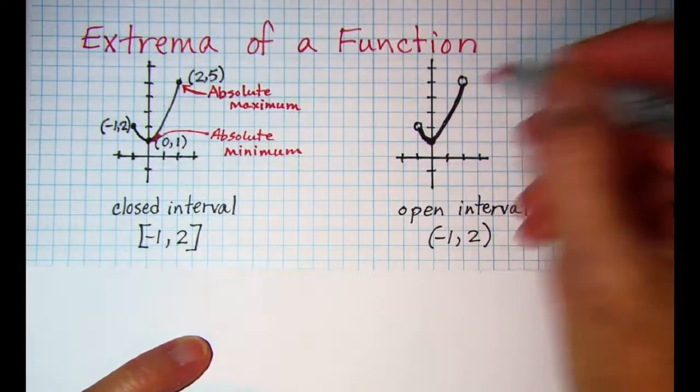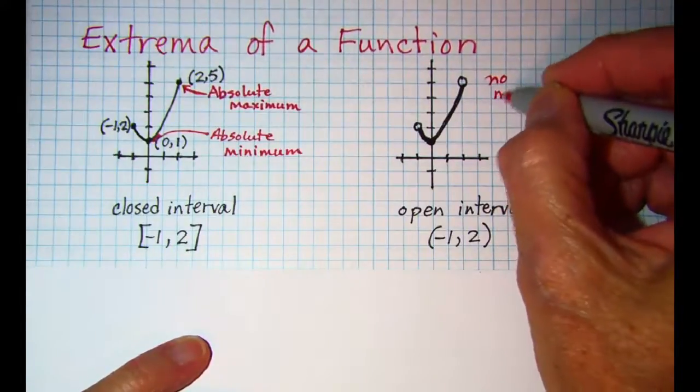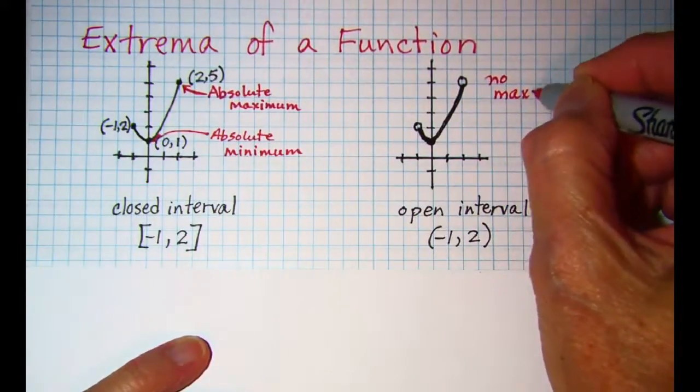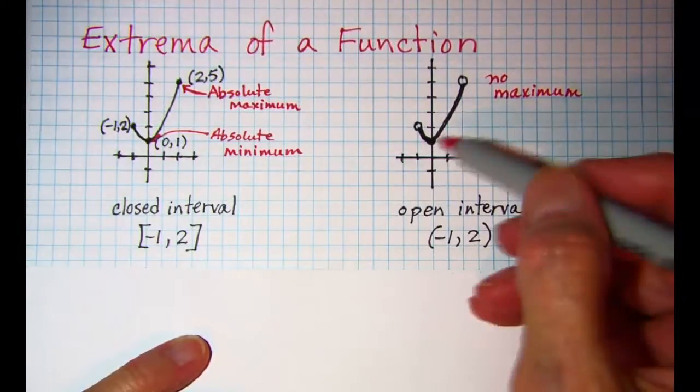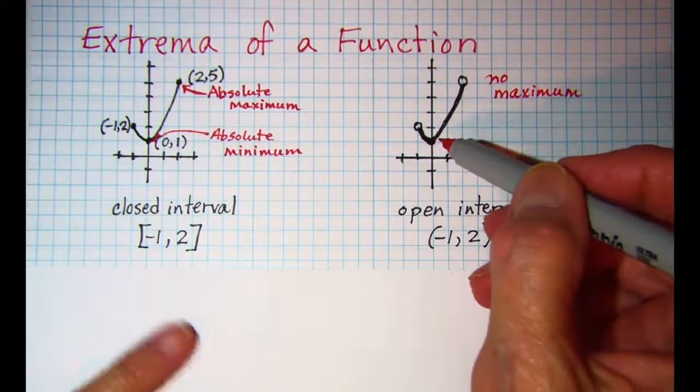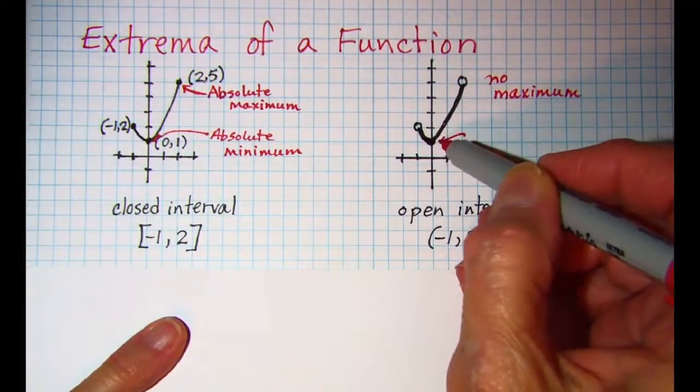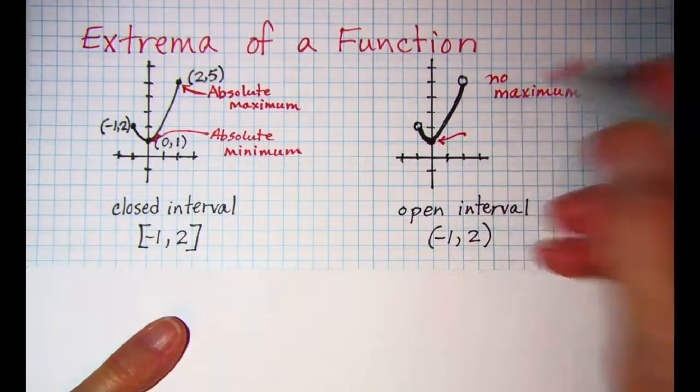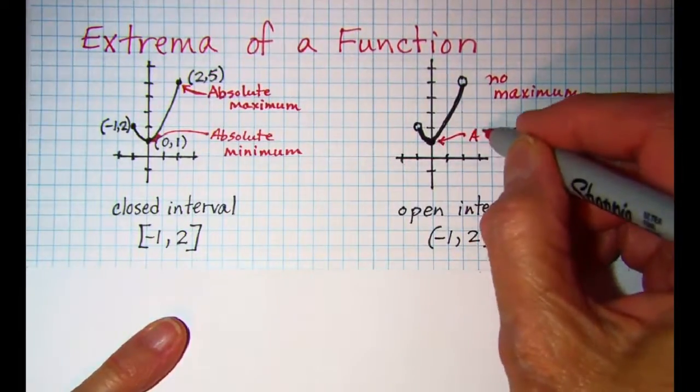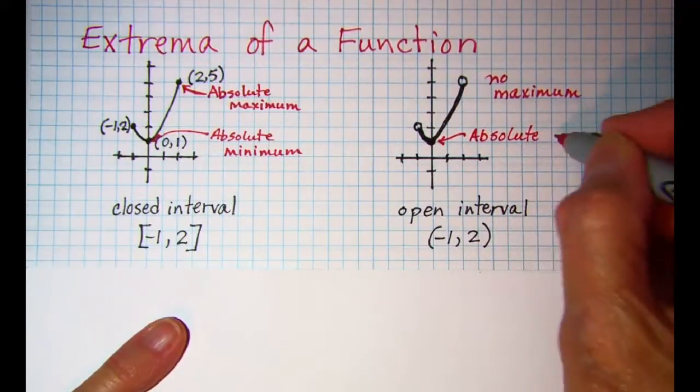for this curve. So there's no maximum. Now we do however know that we can find a minimum because this point is included in the graph. So this point would be our absolute minimum.